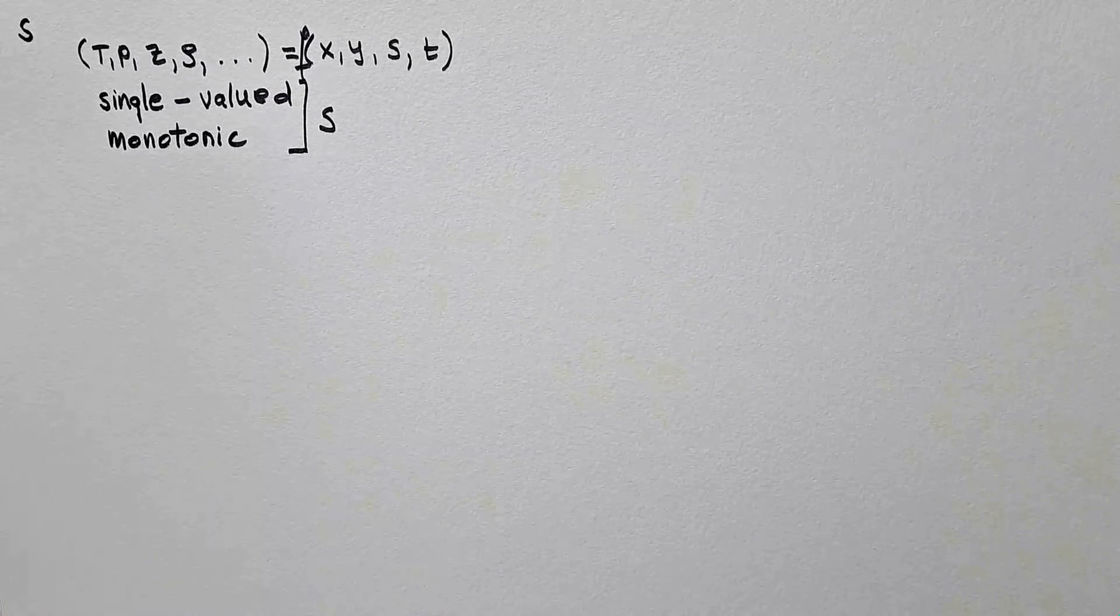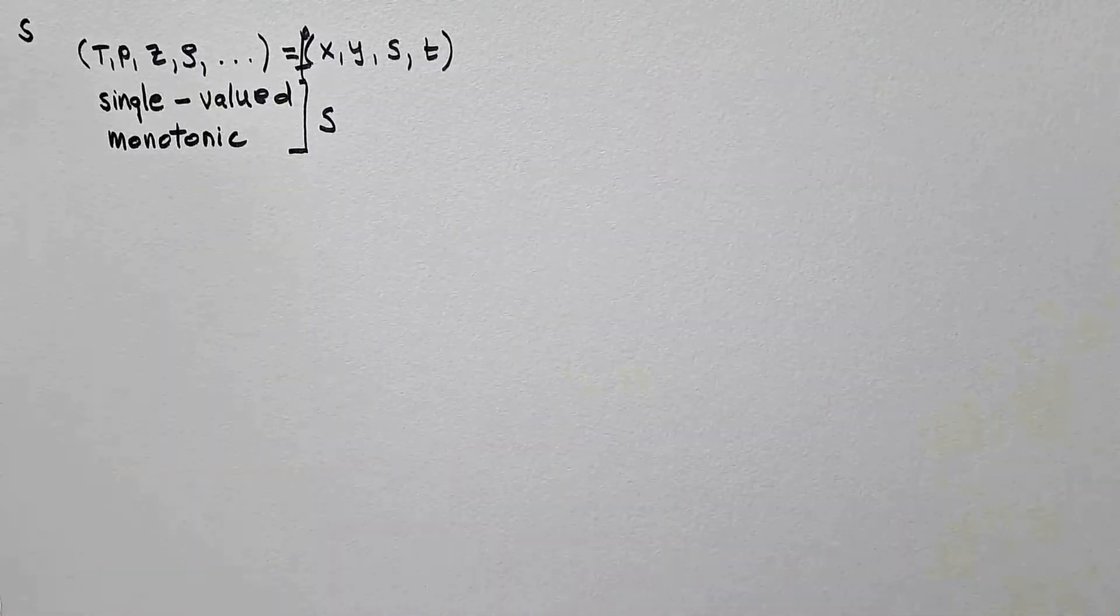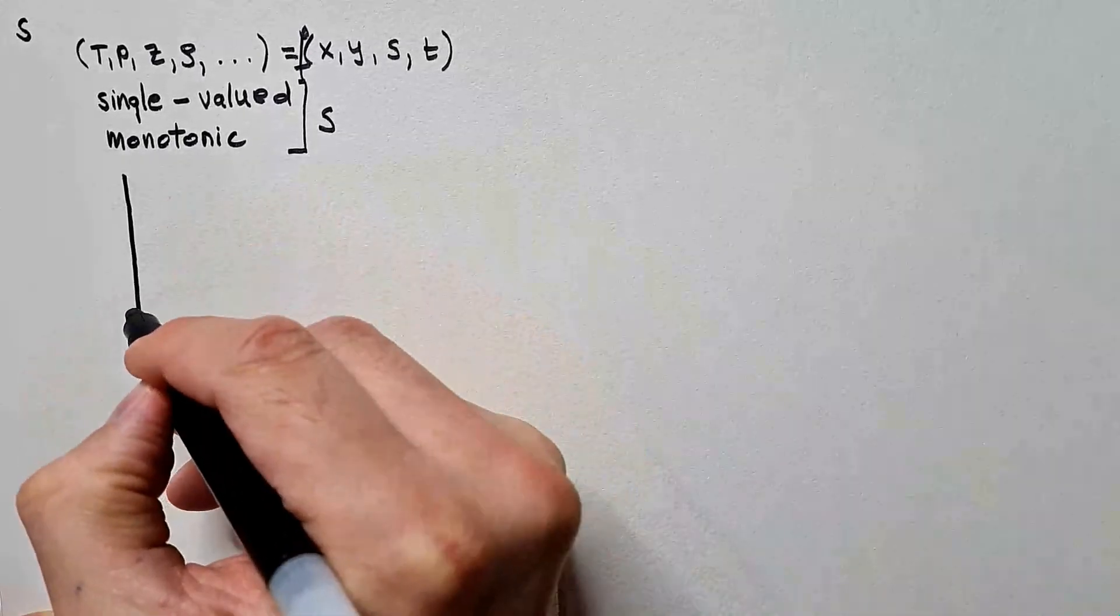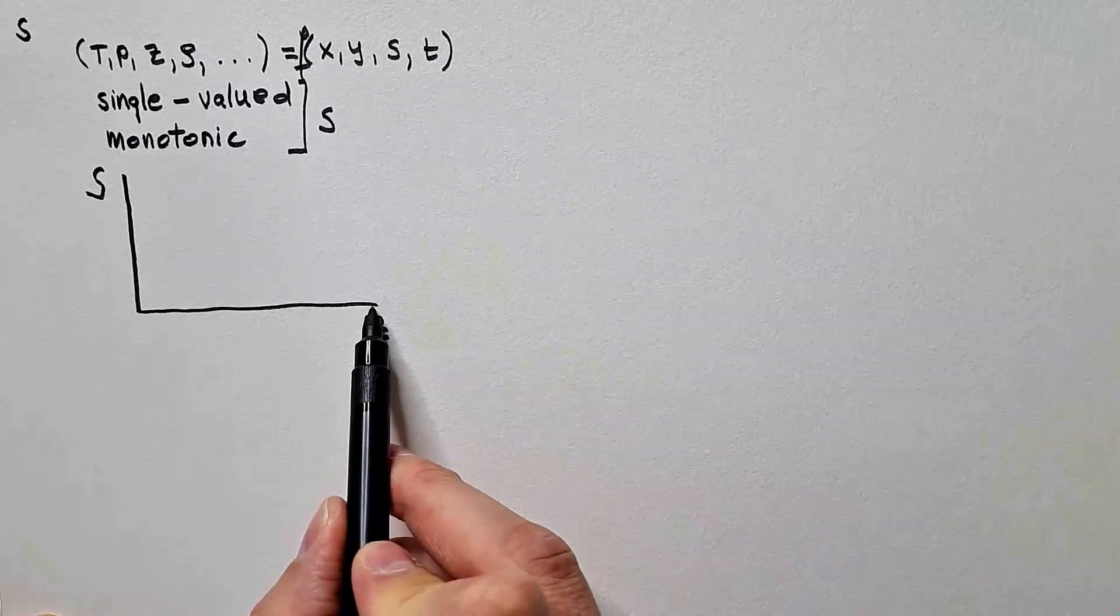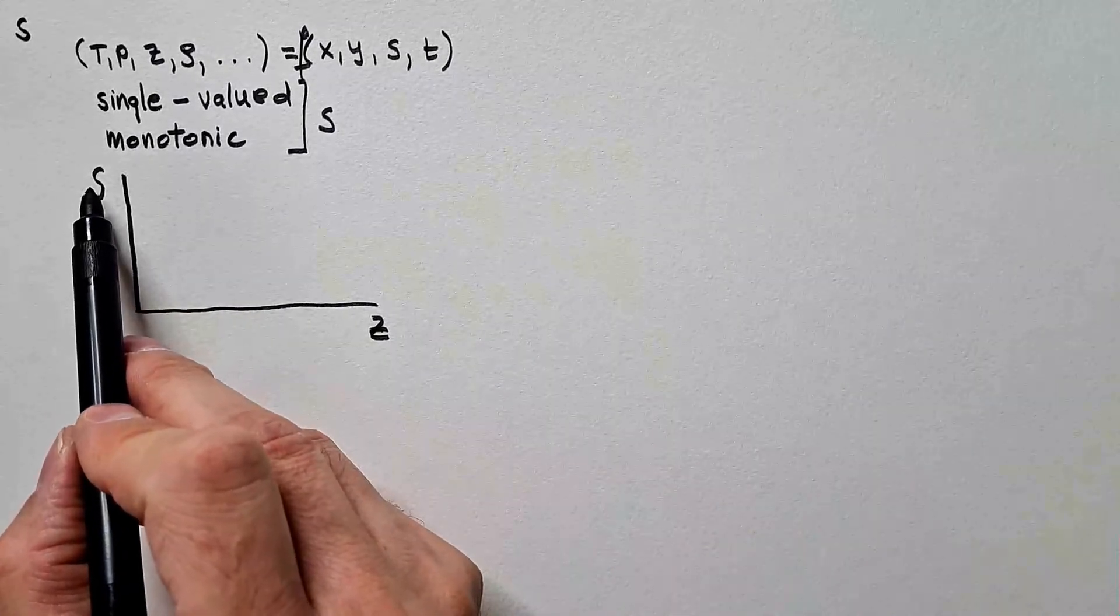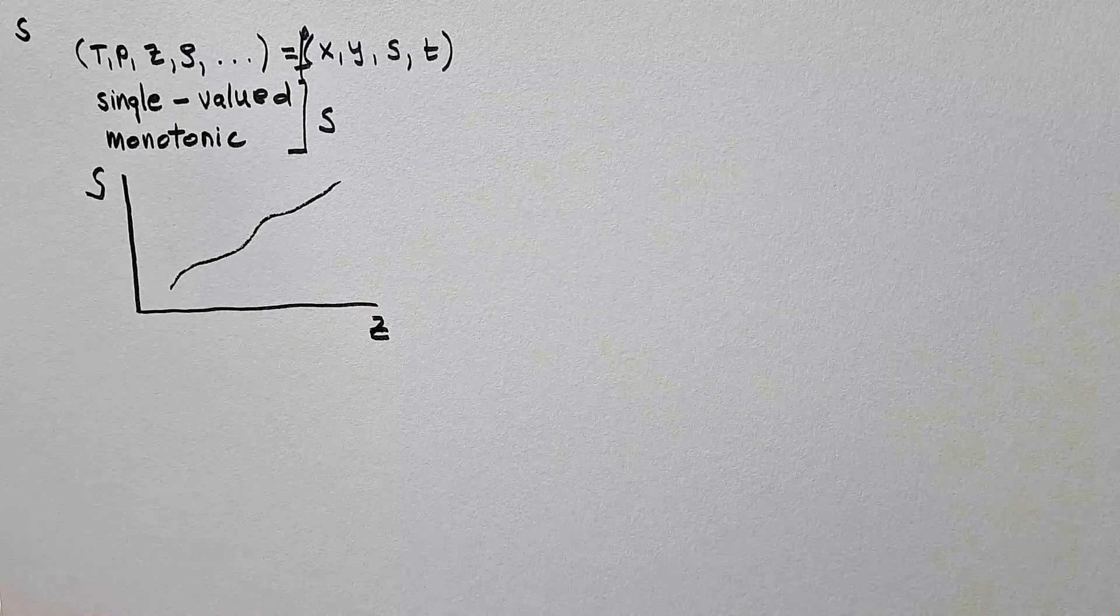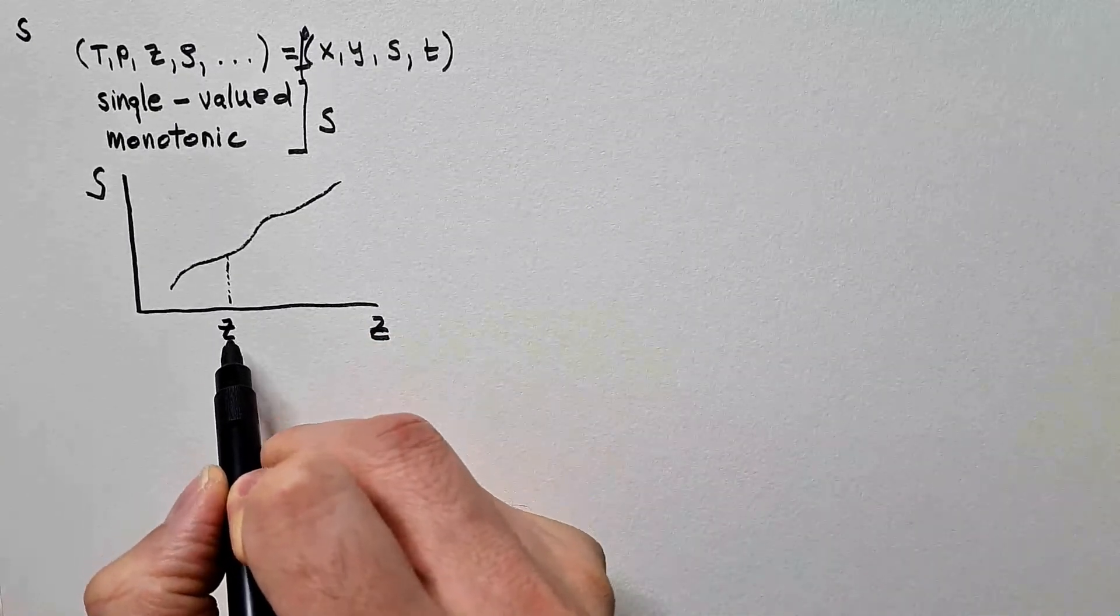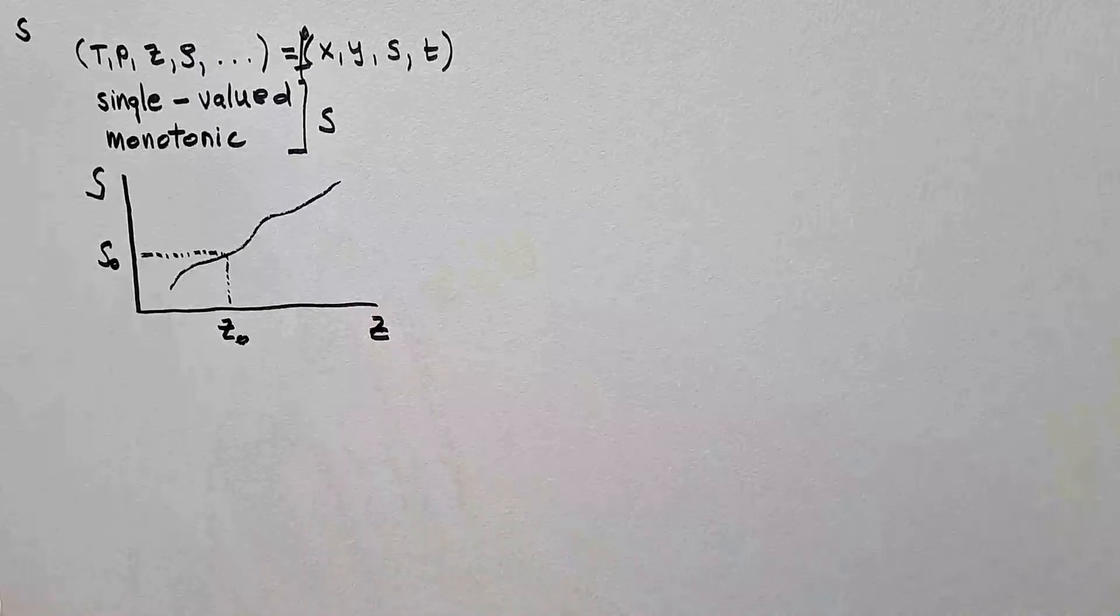Single-valued means that this variable s has only one value at a given height. Monotonic means that the function is entirely non-increasing or non-decreasing. Let me demonstrate that. Let's say I have here s, z. Here is height, in this case horizontally plotted, and here is this variable s that we want to use as the vertical coordinate. Is this a good candidate? I claim it is, because at any height, let's say z0, I have only one value, s0. And that means single-valued function.